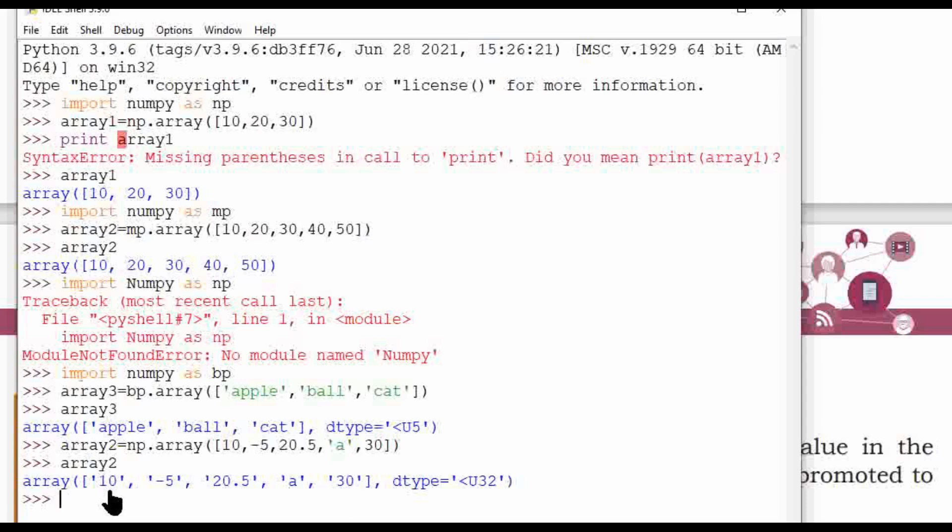Then what happens? See the results. Now 10, -5, 20.5, 30 is promoted as string because one of the items in the list was a string. So all the items were promoted into a string. Understood?